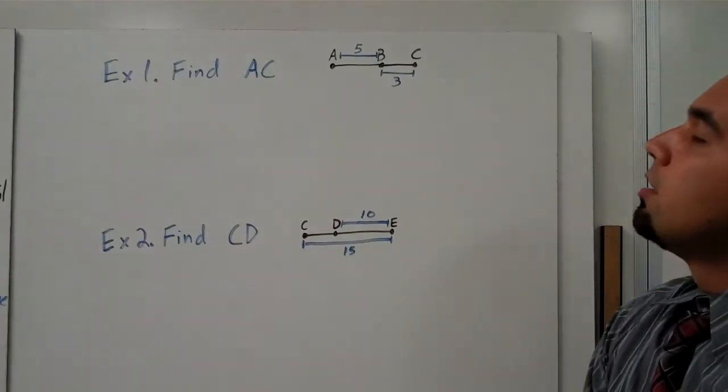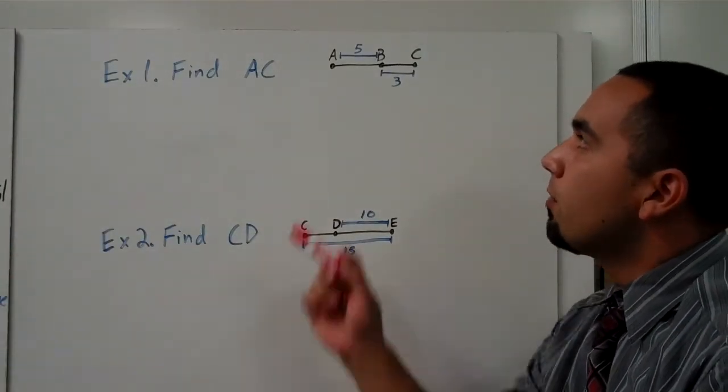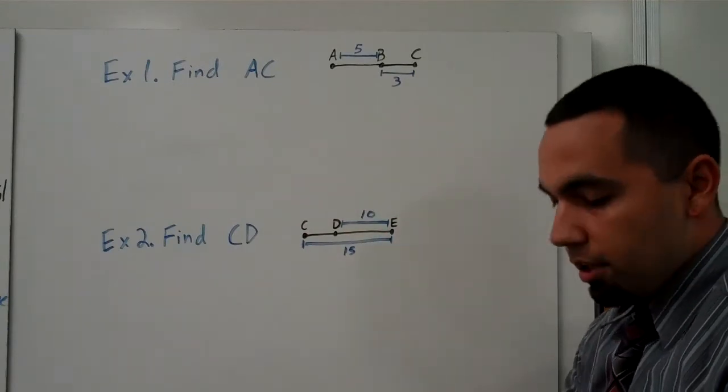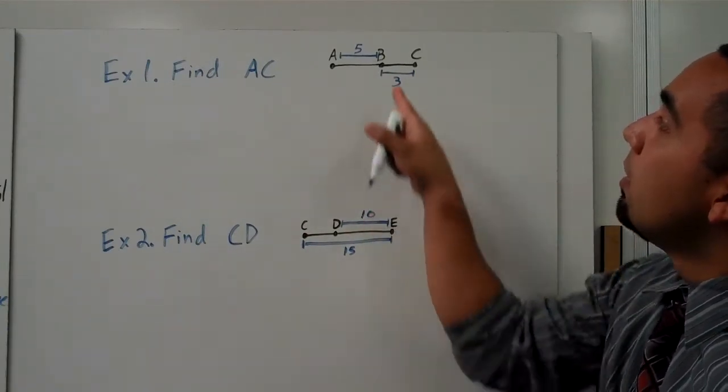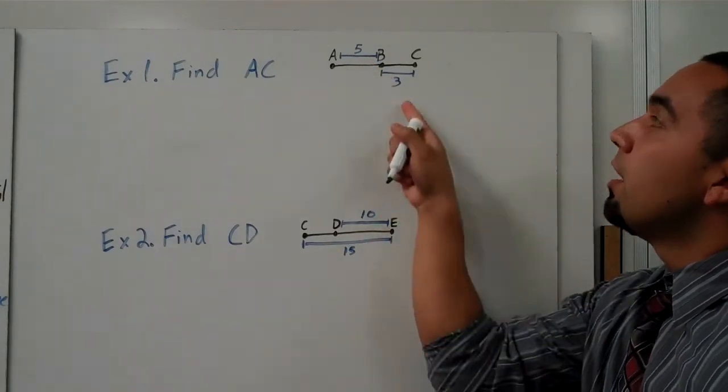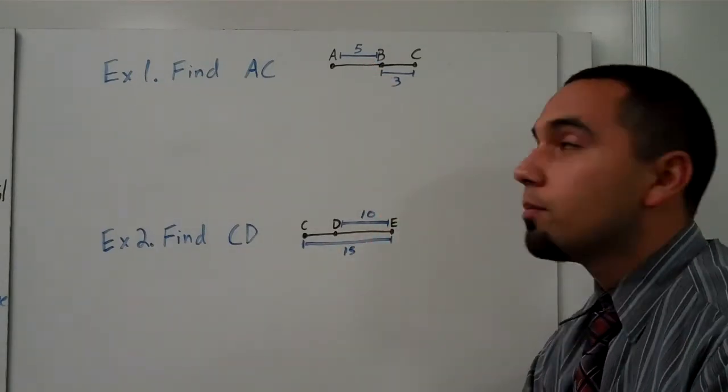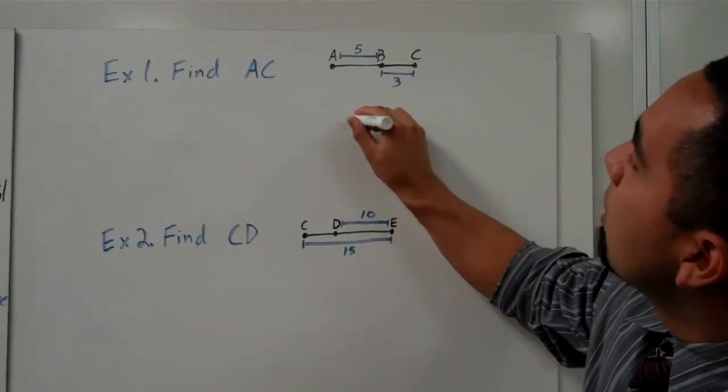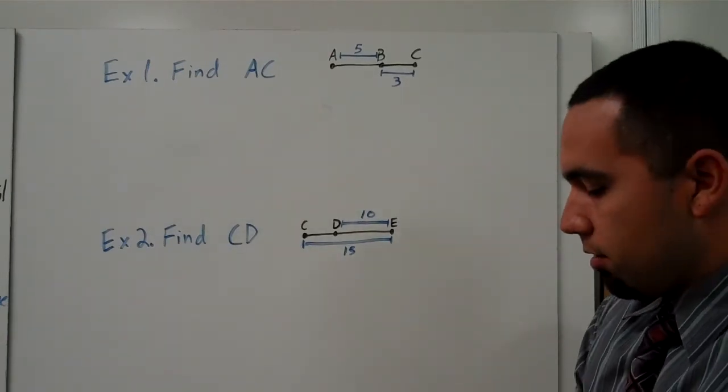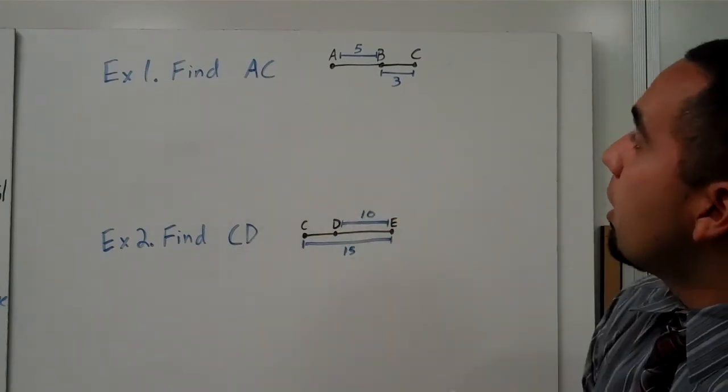Example one says find AC. So here's our diagram. We just take a look at it, and if we look at it we can see that we know that AB is 5 and BC is 3. So if we want to find AC, all we have to do is combine those two together.